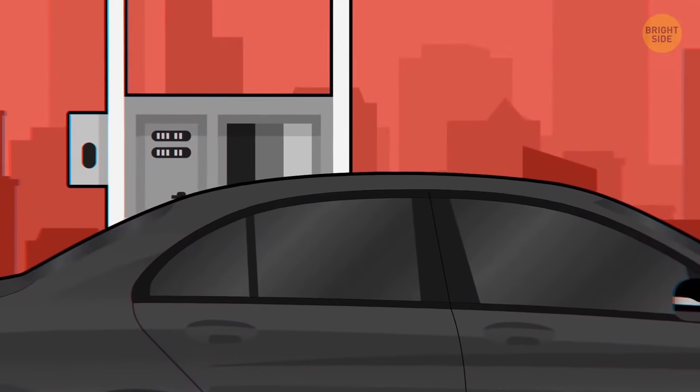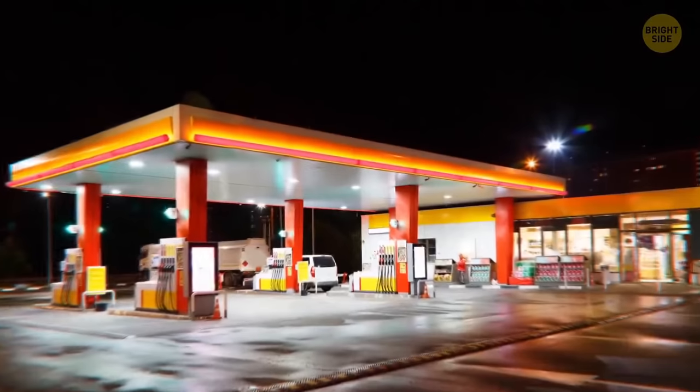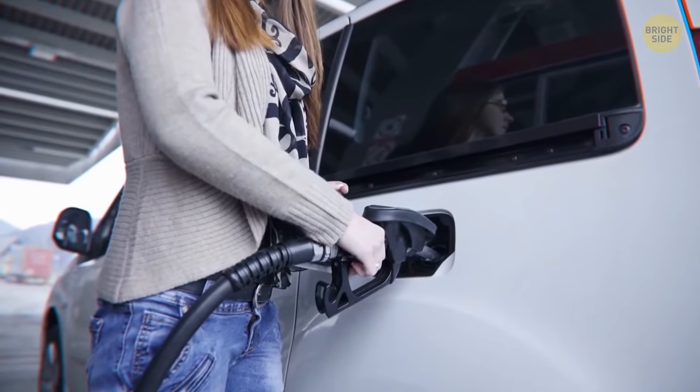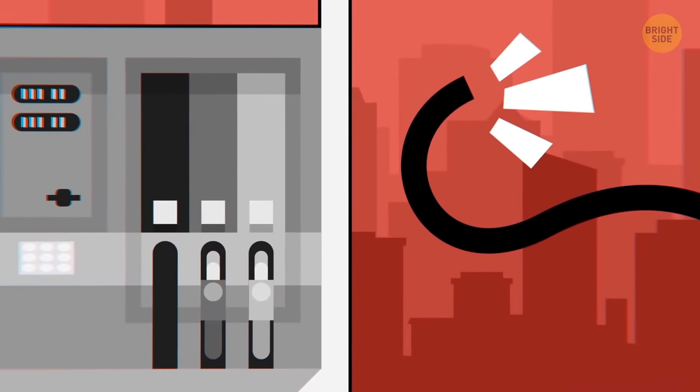Some people still forget to engage the hose from their car after filling up with gas. Luckily, a lot of gas companies realize this, so if you happen to drive off with a hose still attached to your car, there's a magnetic connector that disengages when pulled.